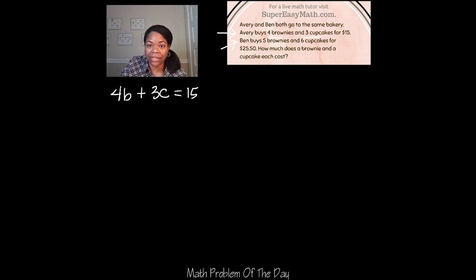Now let's do the same thing but with this next sentence. It says Ben buys five brownies and six cupcakes for $25.50. Okay, so we got five brownies and six cupcakes and that was $25.50.